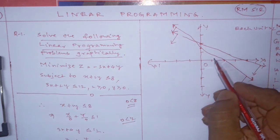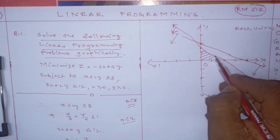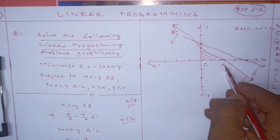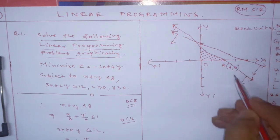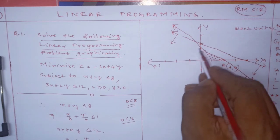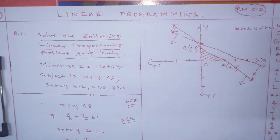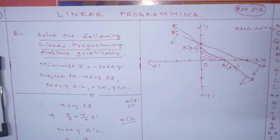Now what you have to do - the common part between these two is the feasible region. This part is common. So these two points you have to find. This point's coordinate is - A point's coordinate is 0,0. B point's coordinate is 0,3. All other points are not needed.